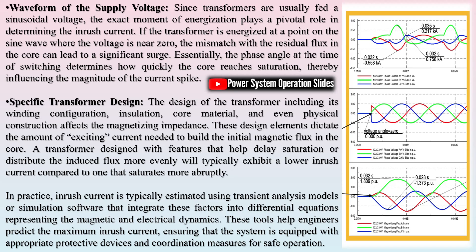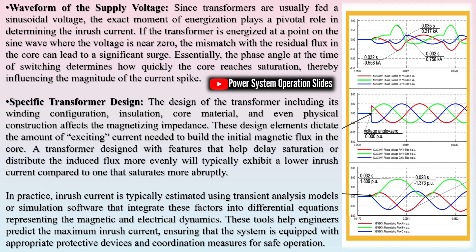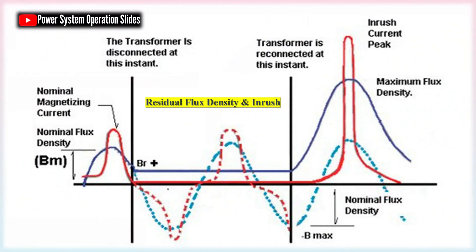Effects of inrush current: Inrush is a normal occurrence when you first energize a transformer. However, in extreme cases, inrush can cause protection devices to trip or even overload the power system or connected equipment.